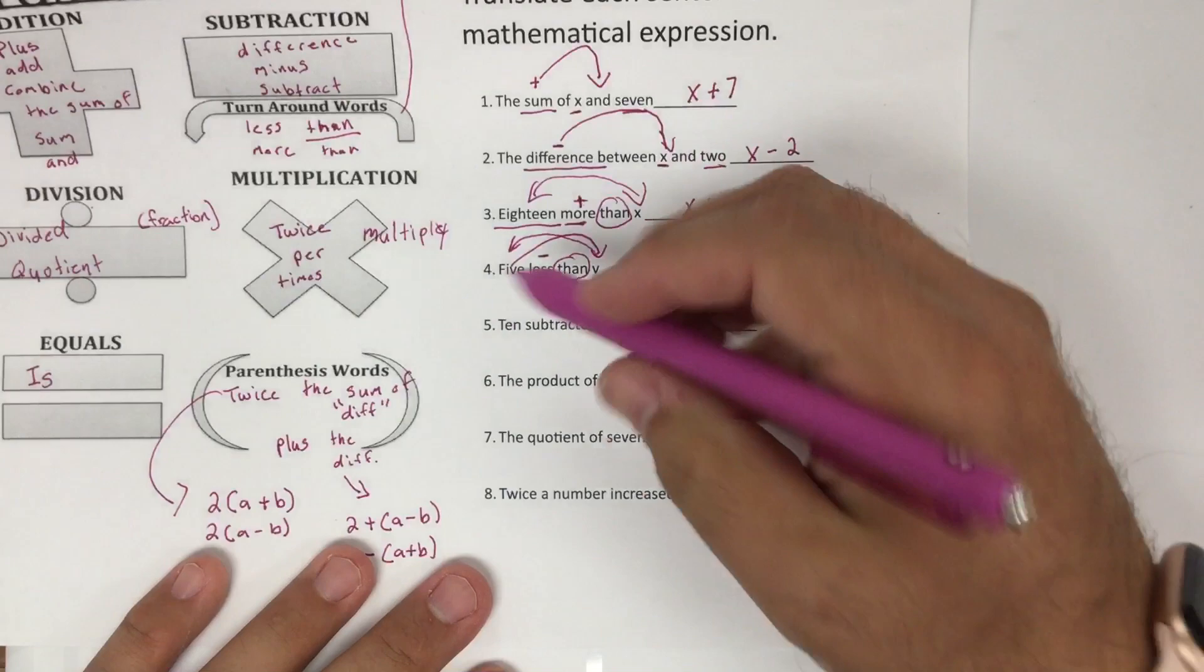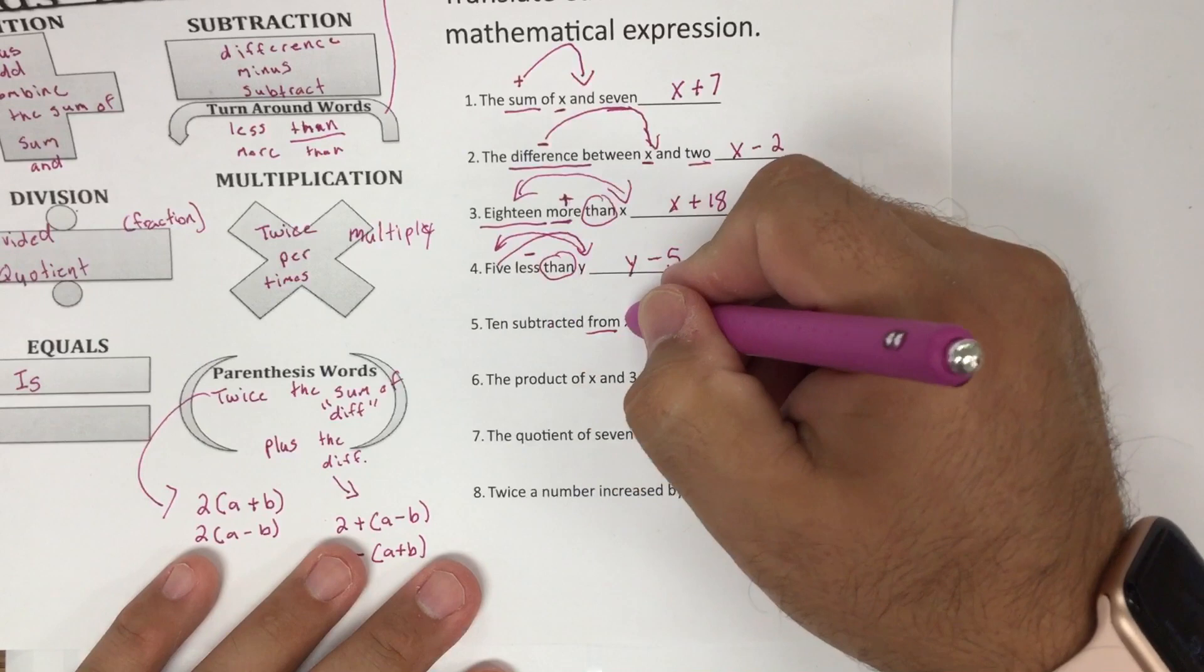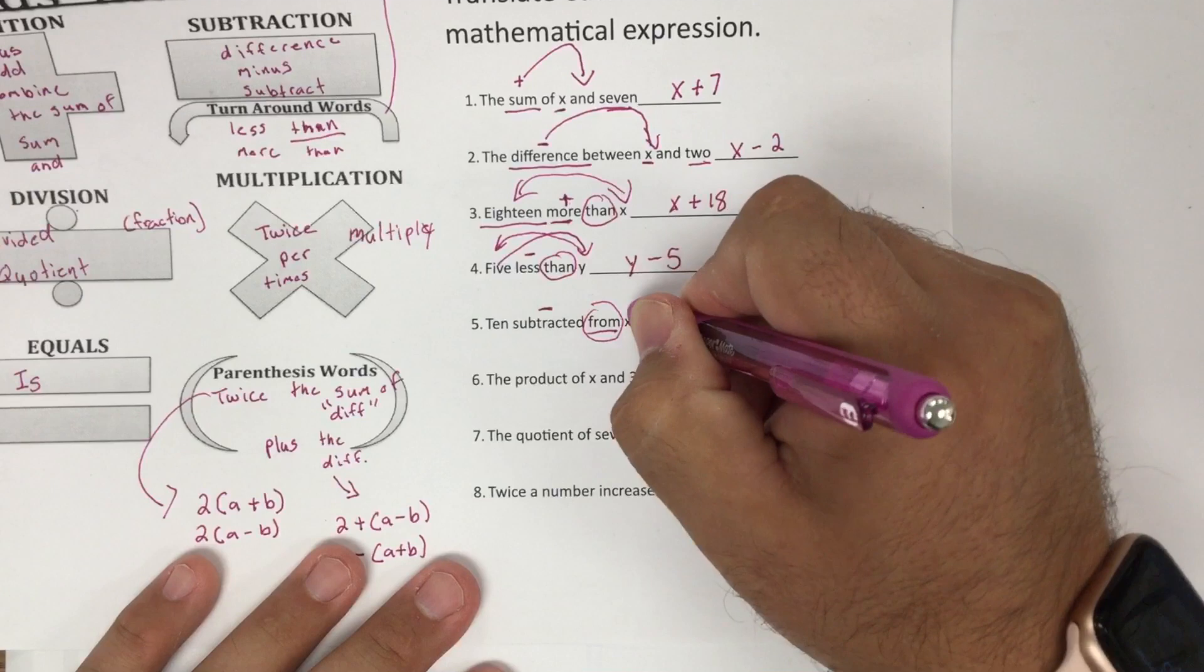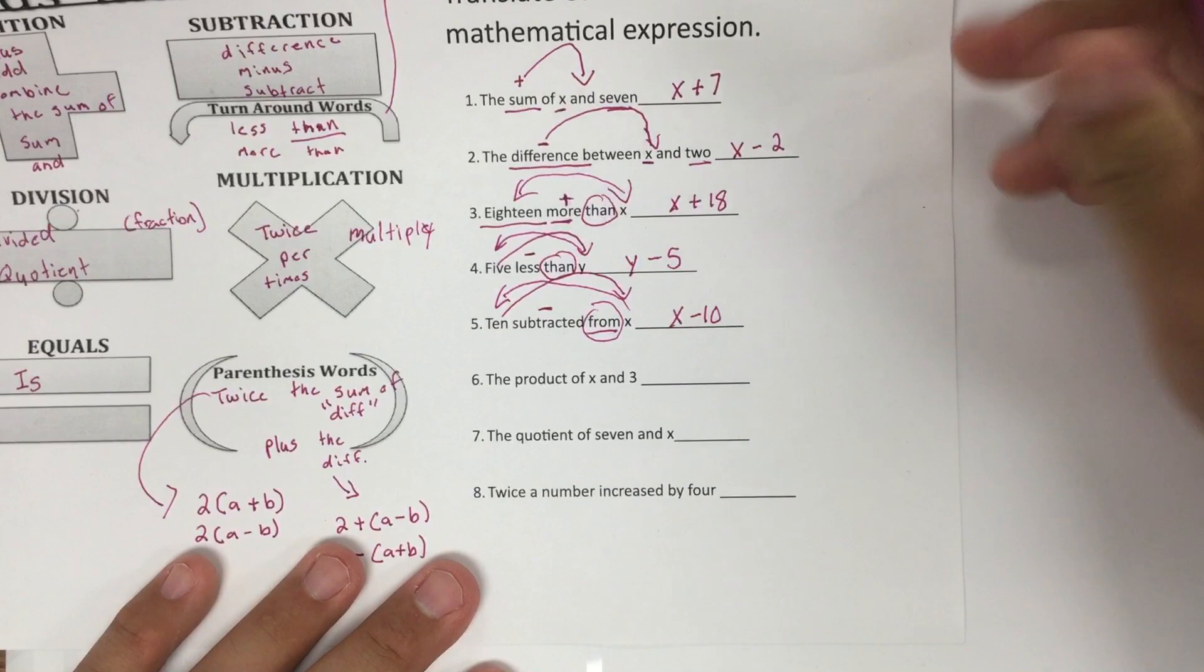Another flip word that you might want to go back and add to your list of notes is from. 10 subtracted from X. I'm taking it away from X. So that's what makes this a turnaround word. So maybe we need to add the word from. So turnaround word, the X goes to the front, the 10 goes to the back. This is now X minus 10 because we're taking away from X.